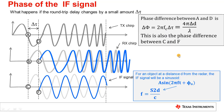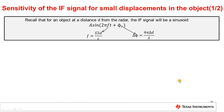To update our understanding of the IF signal: for a single object in front of the radar, the IF signal is a tone with a frequency that is proportional to the distance of the object, and also has a starting phase which changes linearly with small changes Δd in the distance of the object. The frequency is given by F = S·2d/c, and the phase linearly responds to small changes Δd according to Δφ = 4π·Δd/λ.